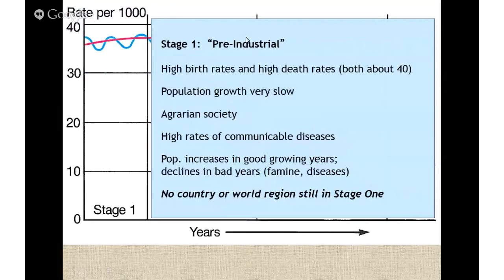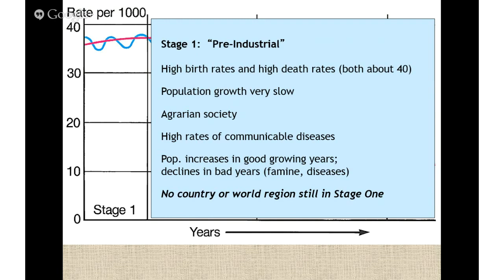Stage one is the pre-industrial stage, and there are no countries in this stage anymore. It's characterized by very agrarian society — hunters, gatherers, and farmers living in very rural situations with high rates of disease. Population growth is very slow because you have very high death rates and very high birth rates. Population increases in good growing years but declines in famine or disease years, and that balances out. If you think of most of the planet pre-1700, that would be stage one.